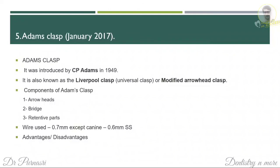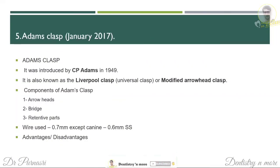Adam's clasp was introduced by CP Adams. Other names include Liverpool clasp, universal clasp, or modified arrowhead clasp. The components of Adam's clasp are arrowheads, the bridge, and the retentive parts. It is normally made up of 0.7 mm stainless steel round wire, except on canines where 0.6 mm wire is used. You can also write about the advantages and disadvantages of Adam's clasp.